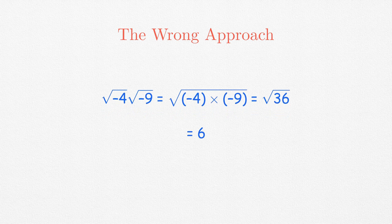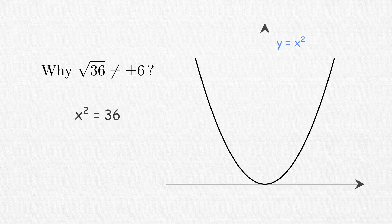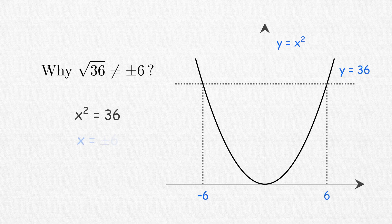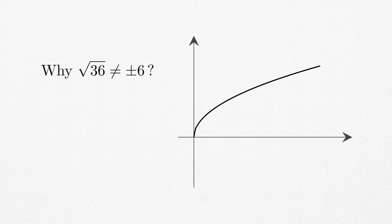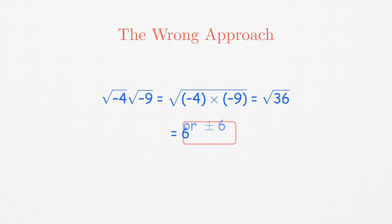Just note that square root of 36 is not equal to plus minus 6. Though x squared equals 36 means that x equals plus or minus 6, the square root function actually gives us one value as all functions should give.